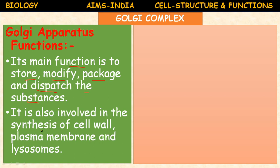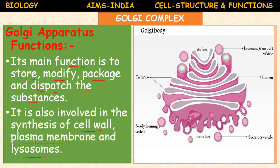The Golgi apparatus is also involved in the synthesis of the cell wall in plant cells, synthesis of the plasma membrane in animal cells, and also in forming lysosomes in animal cells. It has a cis phase and a trans phase. The Golgi apparatus is secretory in function. The number of Golgi bodies varies from cell to cell.